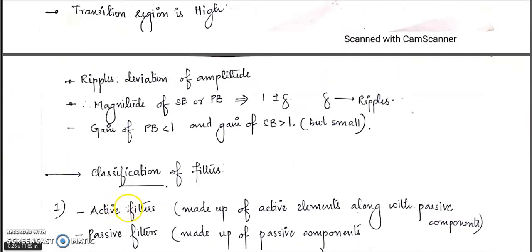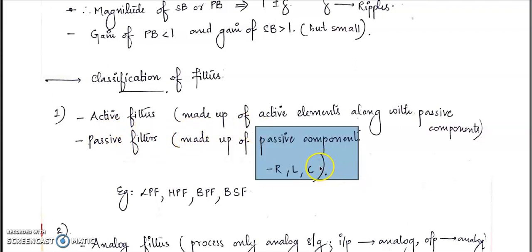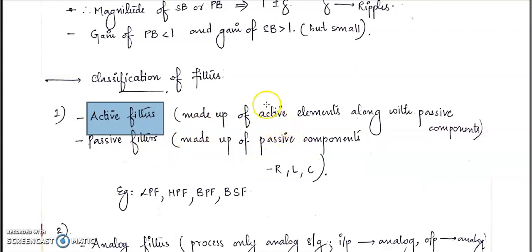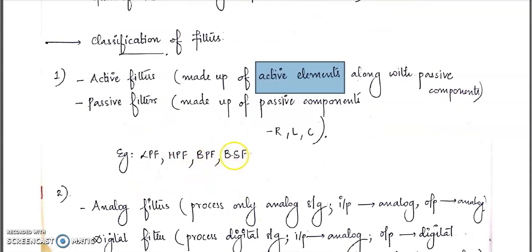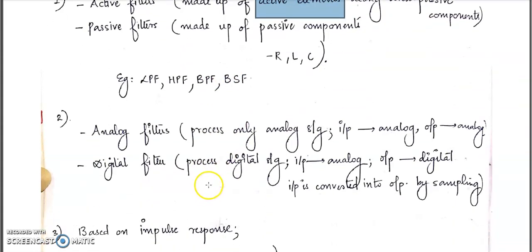Moving on to the classification of filters: the first category is active filters versus passive filters. A passive filter is made up of passive components — resistors, inductors, and capacitors. An active filter includes passive components along with active elements. We can design low pass, high pass, band pass, and stopband filters using both active and passive components.